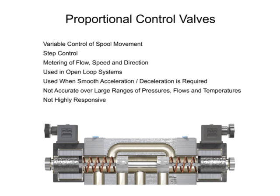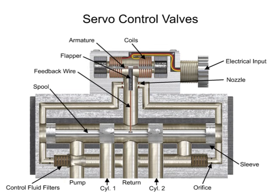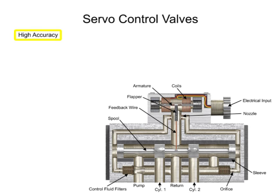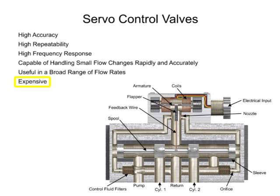The third type of hydraulic directional control technology is called the servo valve. First developed in the 1940s, servo valves operate with very high accuracy, repeatability, and high frequency response. Servo valves are highly responsive and capable of handling minuscule flow changes both rapidly and accurately over a broad range of flow rates, but at an extra cost. The main difference between proportional and servo valve circuit design is that servo systems have a method of feedback that assures the actuator is doing what the controller tells it to do.